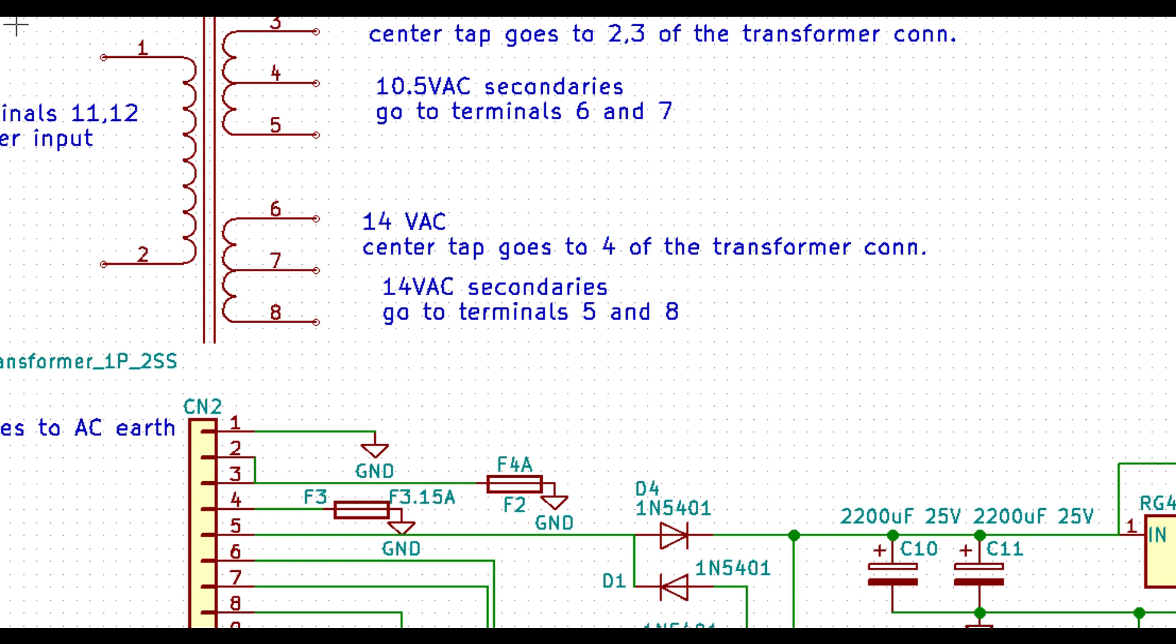Notice, however, that only the center tap of each secondary runs through a fuse. That was done to make the supply smaller and cheaper, but fusing only the center tap does not help at all if, for example, two diodes on the same bridge rectifier short both ends of the same secondary winding.